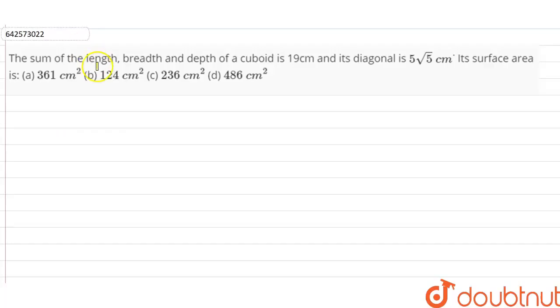Hi students, our question here is that the sum of length, breadth and depth of a cuboid is 19 cm. Its diagonal is 5 root 5 cm. Its surface area is...